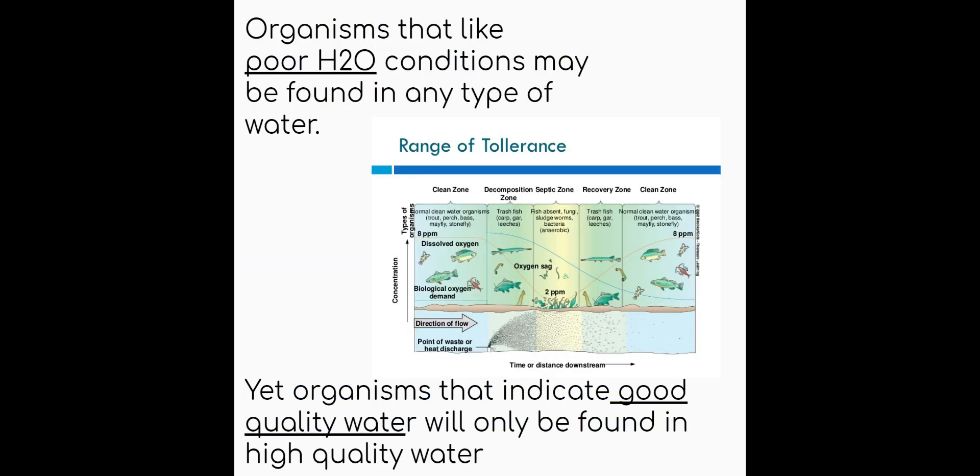So posed to you were two questions about how organisms can live in water. If it's a good quality water, could bad quality organisms live in it and vice versa. So organisms that like poor quality water, such as things like black fly larvae, leech, aquatic worms, they actually can be found in any type of water. They like poor quality water, they can thrive in poor quality water, but they're okay with good quality water too. So if you're a poor quality water organism, you like it all.